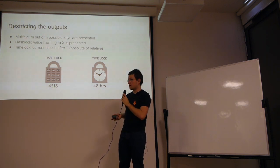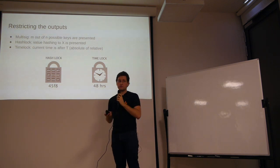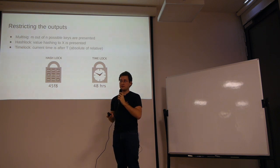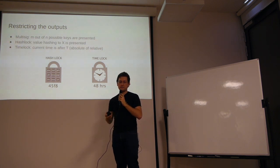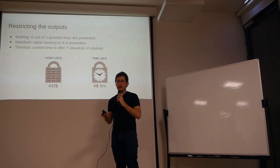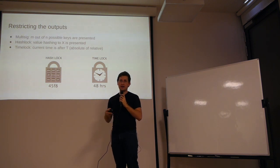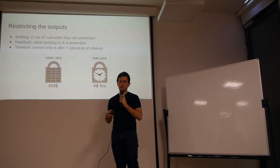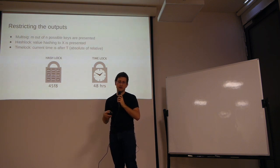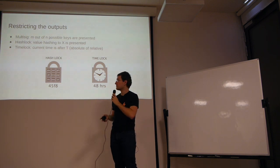Hash locks allow outputs to be constrained by the knowledge of some secret value. The output contains some hash value, and the one who wants to spend the coins must provide the input that hashes to this predetermined value. So knowledge of some secret allows you to spend the coins.